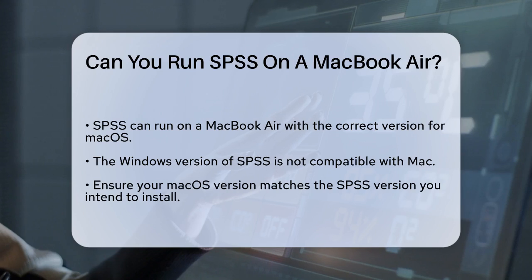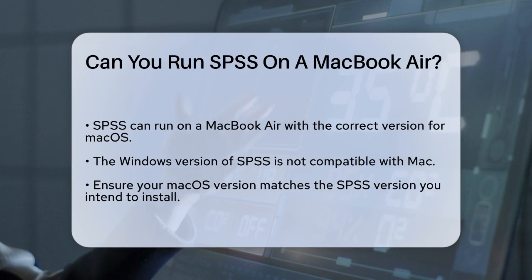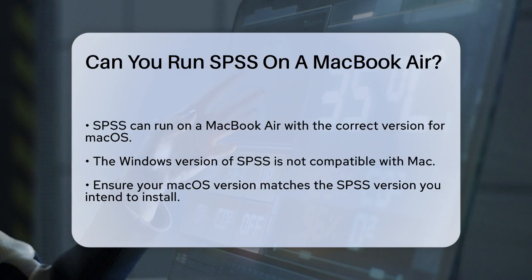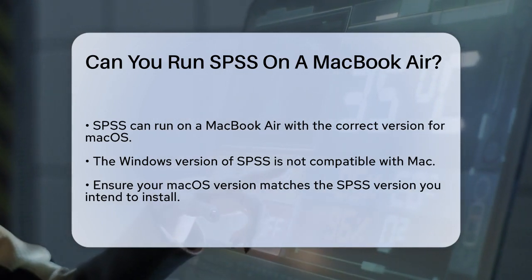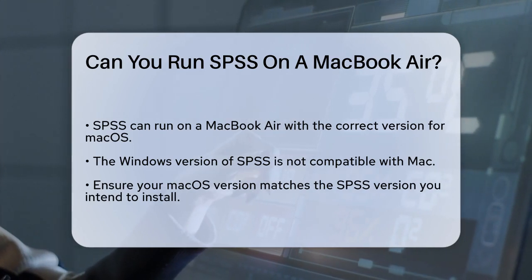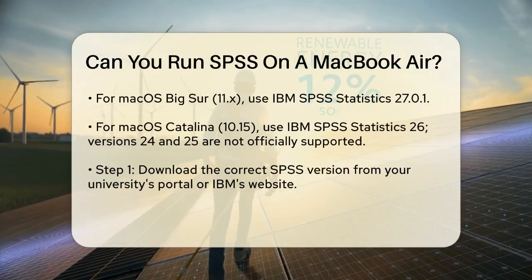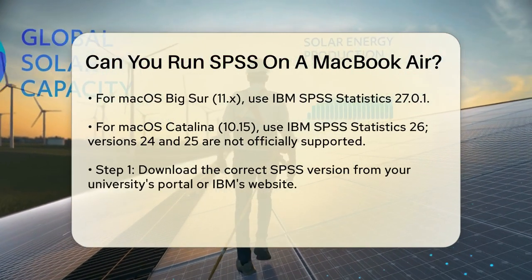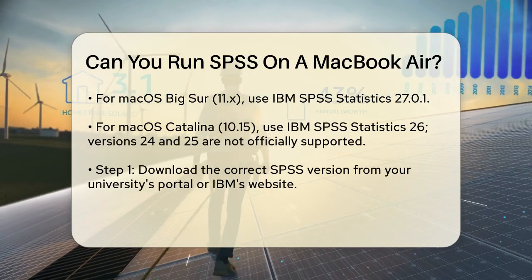To install SPSS on your MacBook Air, you need to ensure that your Mac's operating system is compatible with the version of SPSS you're installing. For example, if you're using macOS Big Sur 11x, you'll need IBM SPSS Statistics 27.0.1. If you're on macOS Catalina 10.15, you should use IBM SPSS Statistics 26, as versions 24 and 25 are not officially supported on Catalina, although they might still work.